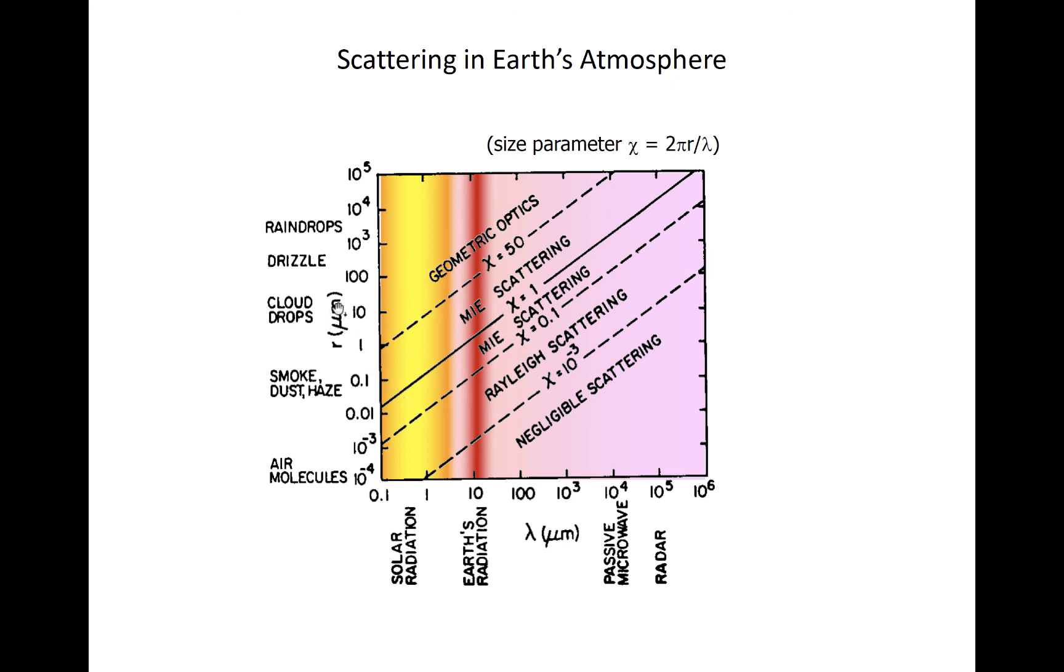As you can see in this plot, cloud drops or raindrops are very efficient scatterers of visible light, and we know this because the χ value is very high. We're above this χ equals 50 dashed line.